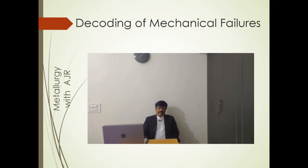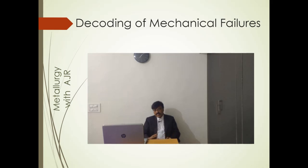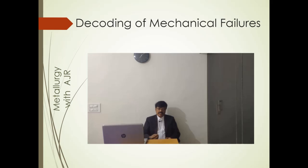Welcome to Metallurgy with AJR. Here I am going to introduce a new concept: decoding of mechanical failures just by visual examination of fracture surfaces. When a material fails into two halves, there are two fracture surfaces, and these are examined visually for various fracture features. For example, you get beach marks in the case of fatigue, and chevron patterns in the case of rapid fracture. These features give information regarding the nature of fracture.